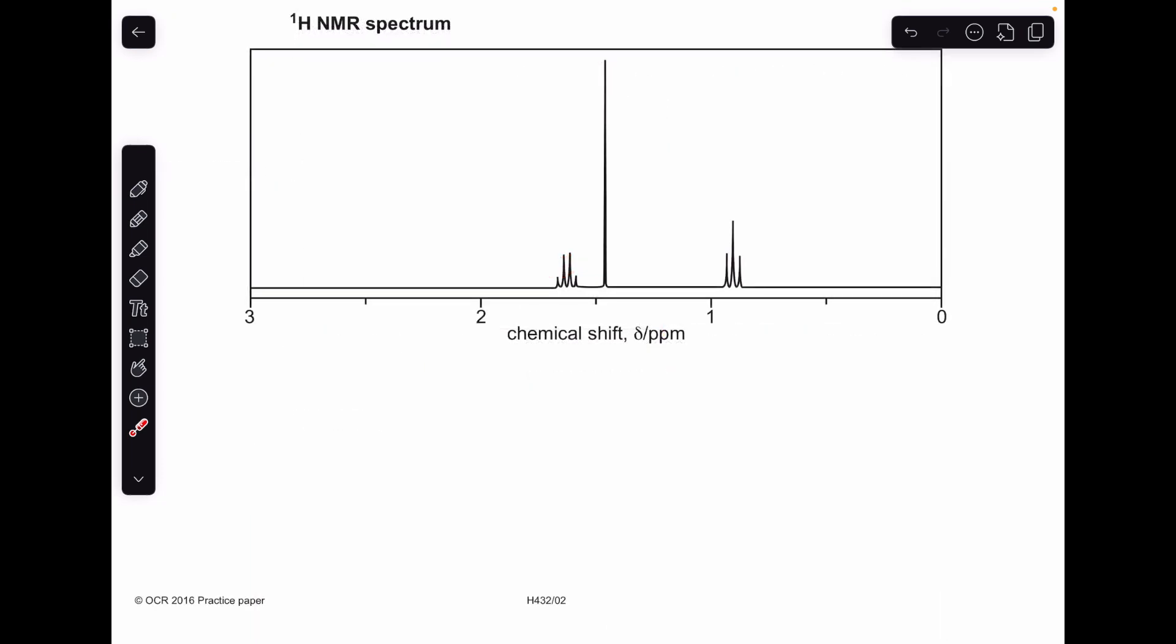Moving on to the proton NMR spectrum now, this is going to be the most helpful piece of information. I'm going to do my usual thing, take each peak in turn, I'm going to talk about the splitting pattern. Obviously, there's no area information, so we can't do anything about that. But we could talk about the shift as well from the position of the signals in terms of their ppm.